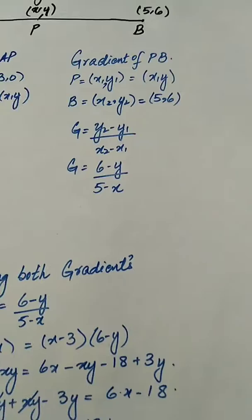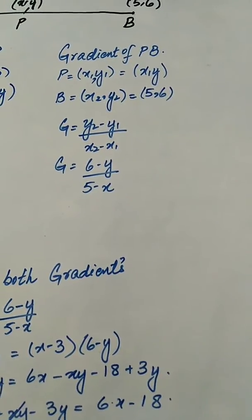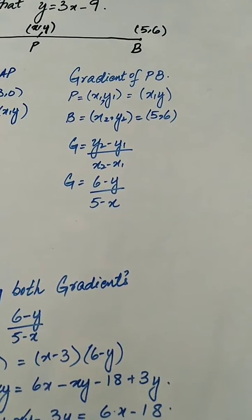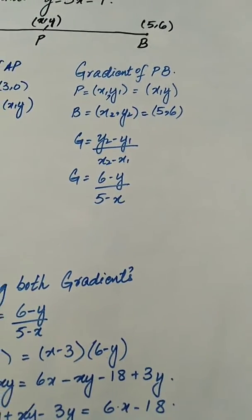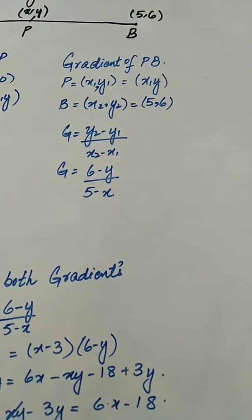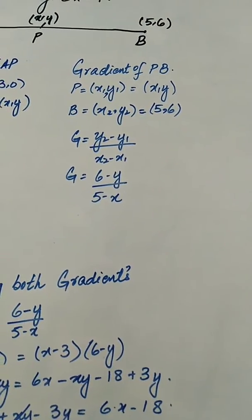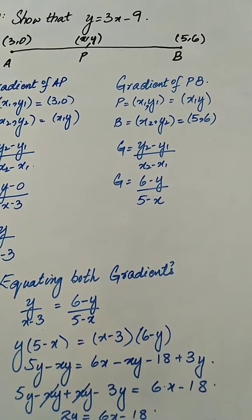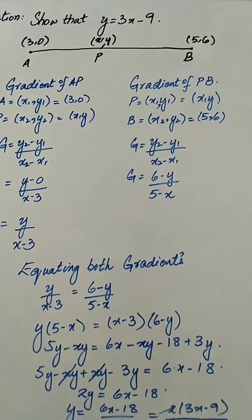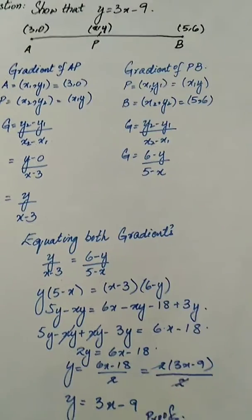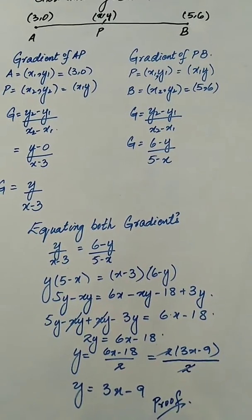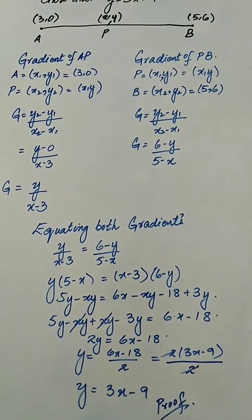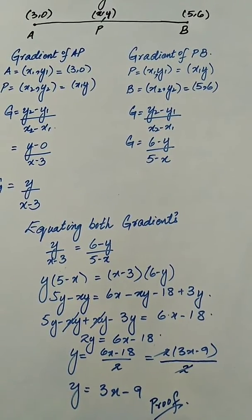Now the gradient of PB: P is x1, y1 = (x, y) and B is x2, y2 = (5, 6). The gradient comes out as (6 - y) / (5 - x). In order to show that y = 3x - 9, we will equate both gradients which we have just found out. Equating both gradients, we have y / (x - 3) = (6 - y) / (5 - x).